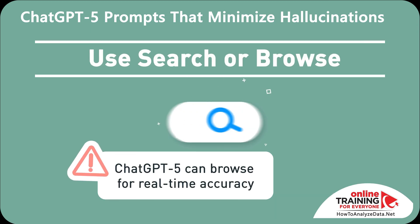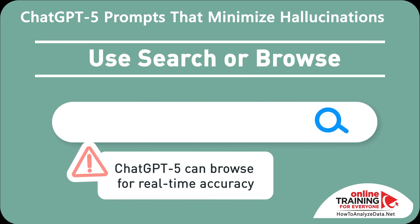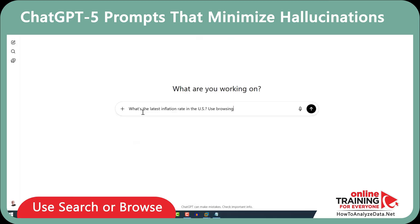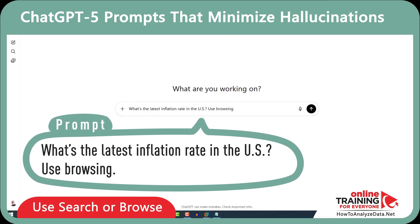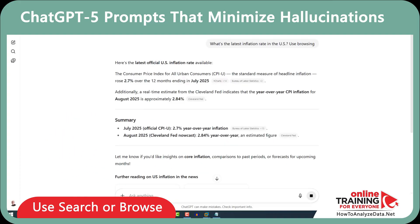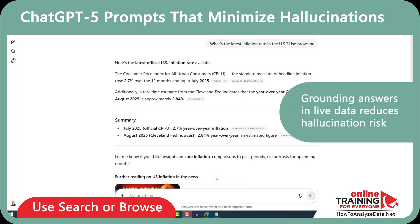Did you know that you can use search and browse to boost accuracy? ChatGPT can browse when enabled — you can use this feature for real-time accuracy. Let me demonstrate: "What's the latest inflation rate in the U.S.? Use browsing." ChatGPT shows the recent value with a linked source, which is the Bureau of Labor Statistics. Grounding answers in live data reduces hallucination risk.